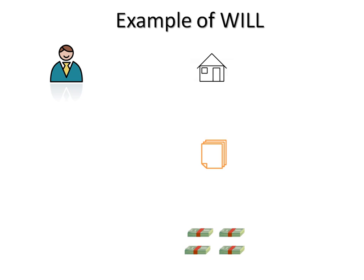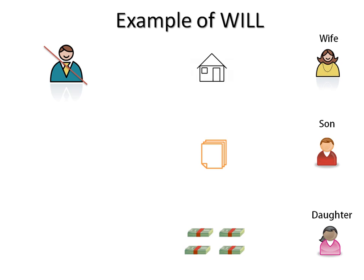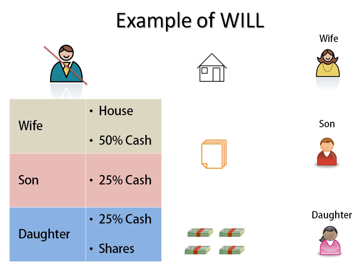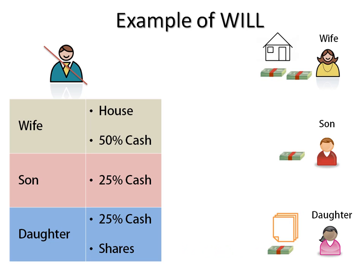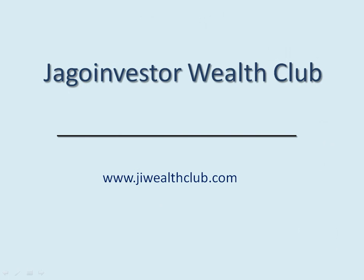Now let's see an example of a will in action. A man has assets: a house, some shares, and cash in a savings bank account. His family includes a wife, son, and daughter. In his will, he writes that his wife should get the house and 50% of the money, his son should get 25% of the money, and his daughter should get all the shares and 25% of the money. As per the will, everything is distributed exactly that way — with no complication or confusion.